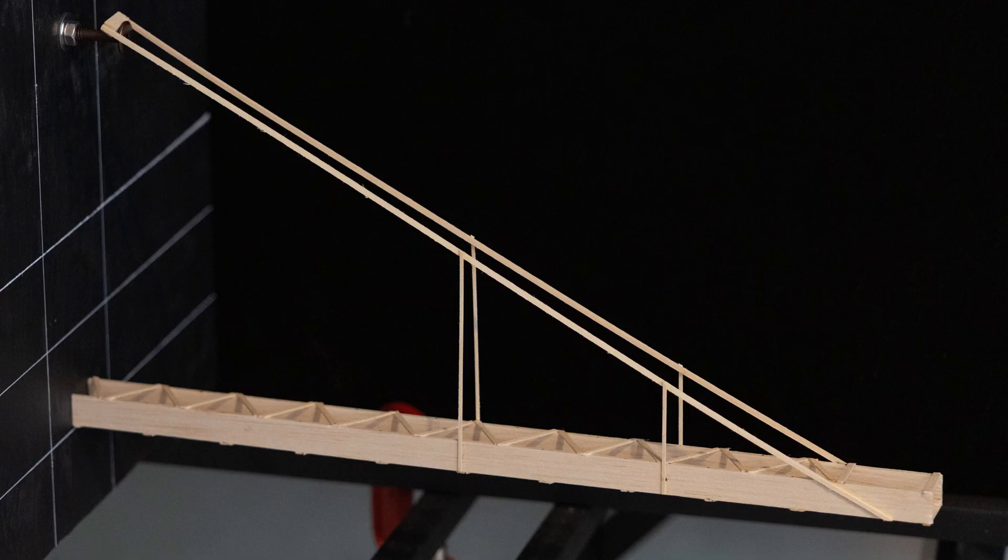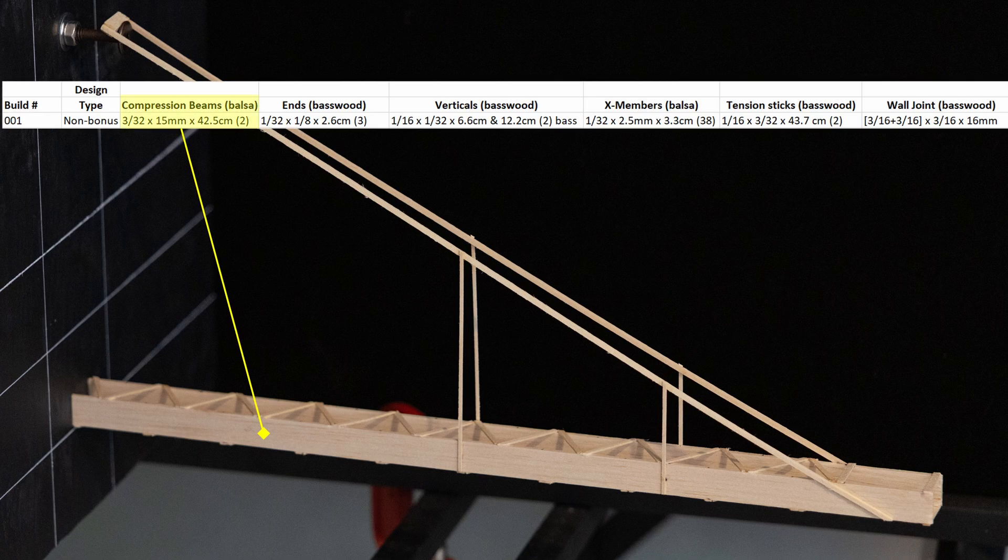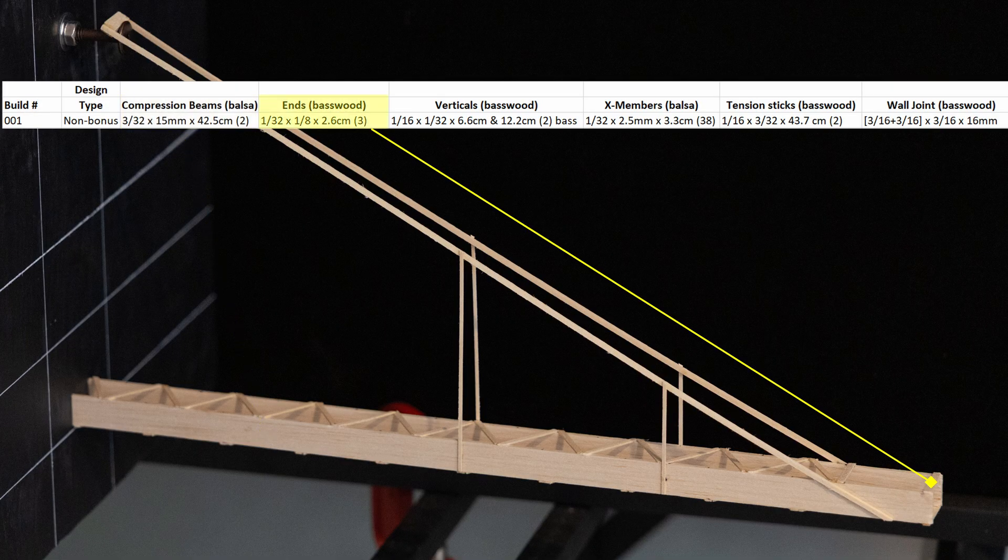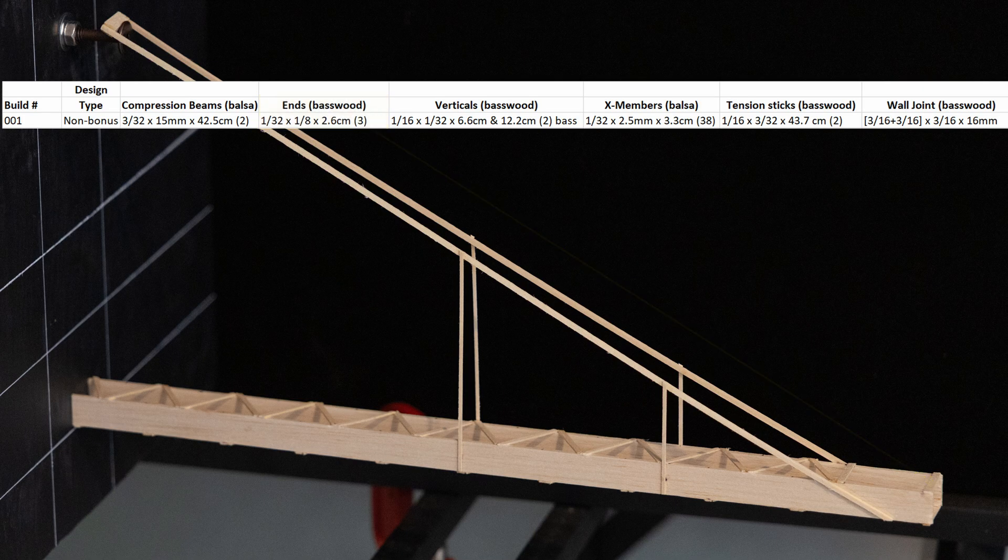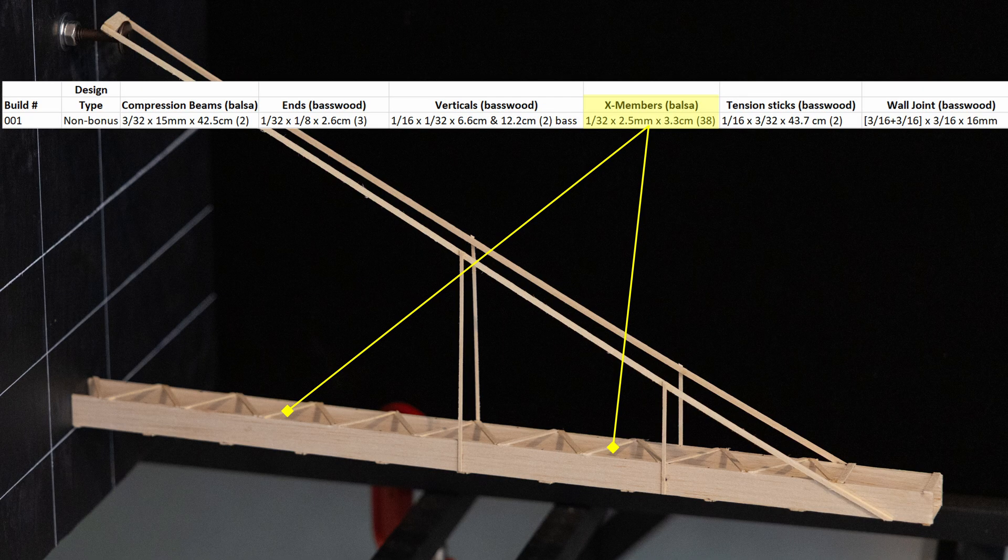Strongly borrowing from what I learned during the previous boomy cycle, this is the design I used. For the compression beams, I used three 32nd sheet balsa cut to 15 mm tall with a length of 42.5 cm. The end pieces were 1/32 by 1/8 basswood cut to 2.6 cm. The vertical pieces were 1/16 by 1/32 basswood and the over-under crossmember design used 38 pieces of 1/32 sheet balsa cut to 2.5 mm by 3.3 cm in length.